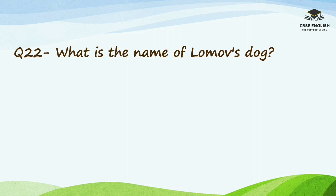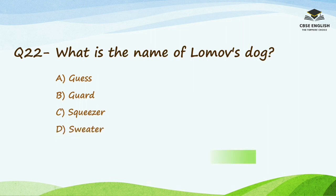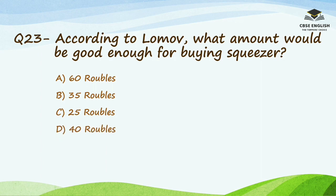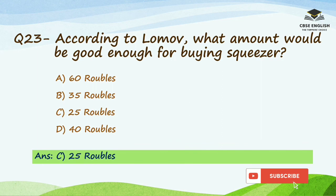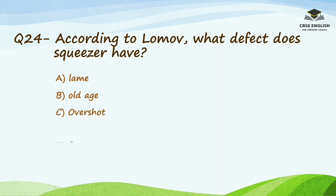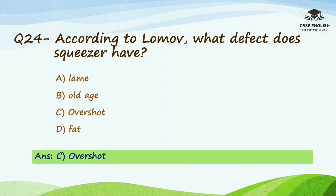Question number 22: What is the name of Lomo's dog? Options are Guess, Guard, Squeezer, or Sweater. The right answer is Guess. Question number 23: According to Lomo, what amount would be good enough for buying Squeezer? Options are 60 rubles, 35 rubles, 25 rubles, or 40 rubles. The right option is 25 rubles. Question number 24: According to Lomo, what defect does Squeezer have? Options are lame, old age, overshot, or fat. The right option is overshot.